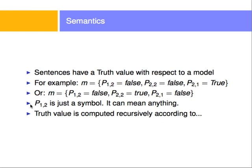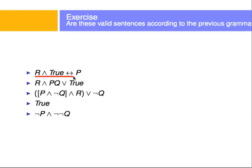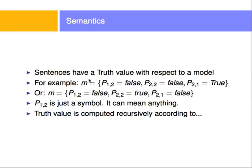In propositional logic, every expression we write — for example, these expressions here — is written according to some syntax, and each expression has a truth value. Each sentence has a truth value with respect to a model, and a model is an assignment of truth values to variables.